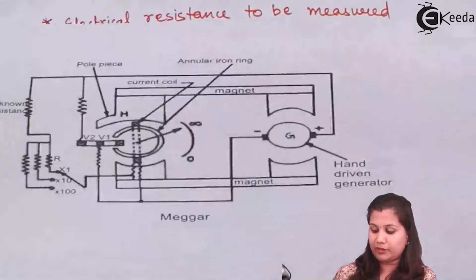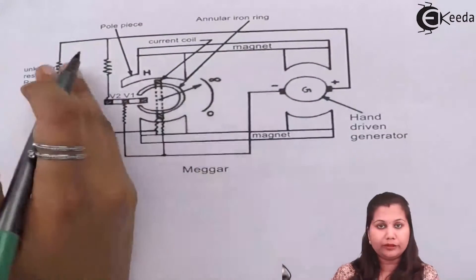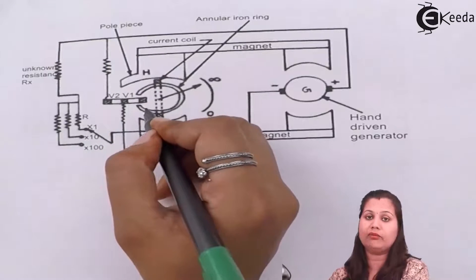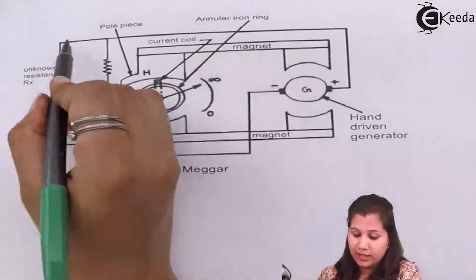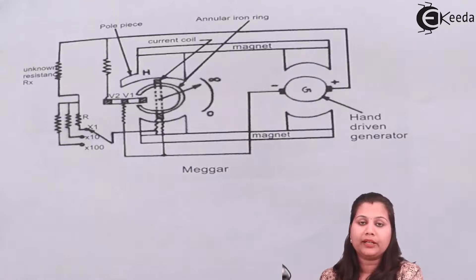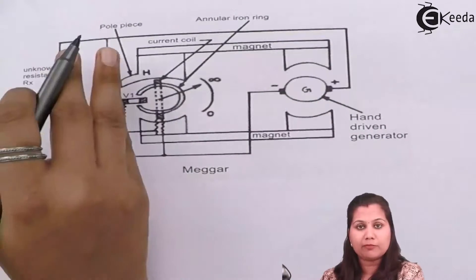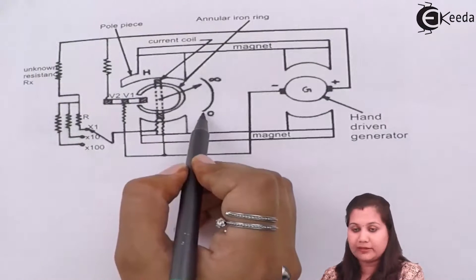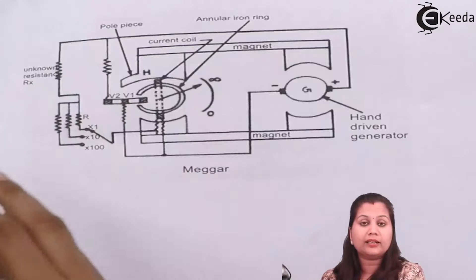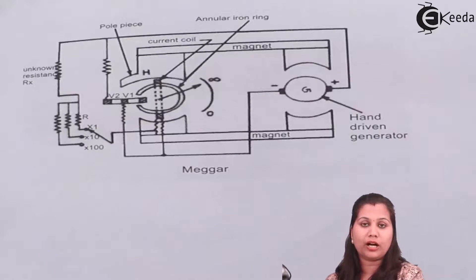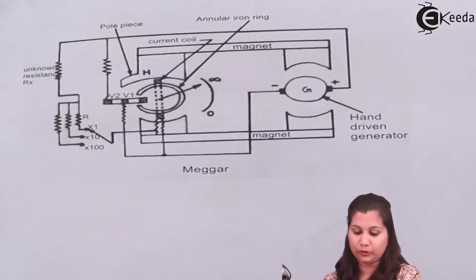If the unknown resistance is of very high value then no current will flow and the pointer will be at the infinity position, meaning the current coil is in a very weak magnetic field. When the unknown resistance is at an intermediate value — not very high and not very small — the pointer will be between zero and infinity. When the unknown resistance is negligible the pointer will be at the zero position and a large amount of current will be flowing in the circuit. This is how the Megger is used for measurement of unknown resistance of the order of 100 kilo ohms or 0.1 mega ohm and greater.